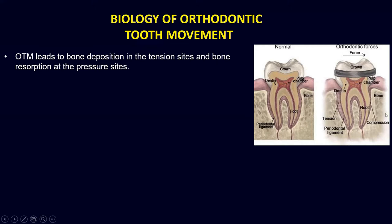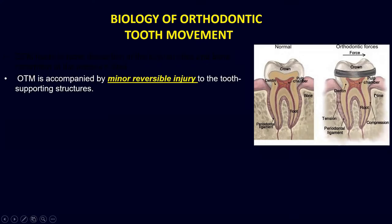So we have two sides: one is a compression site and the other is the tension site. On the compression site, the periodontal ligament is compressed, and on the tension site, the periodontal ligament is stretched. On the compression site, you would observe bone resorption, and on the tension site with the stretch of the fibers, there will be bone forming on this side in order to maintain the thickness of the PDL. Otherwise, the width of the PDL would keep increasing. So resorption is occurring on one side and deposition is occurring on the other side.